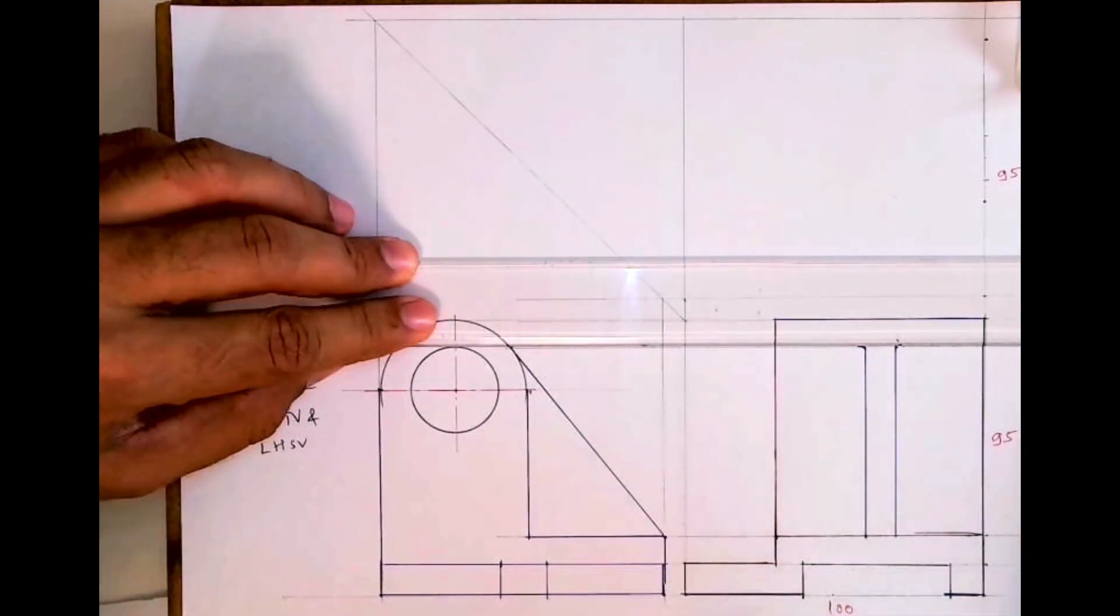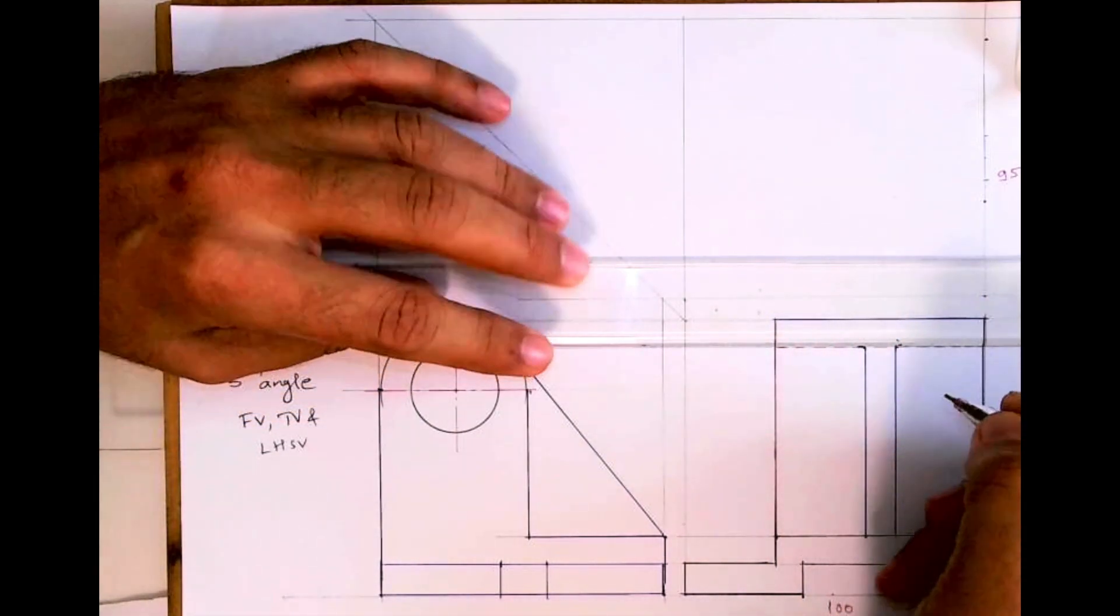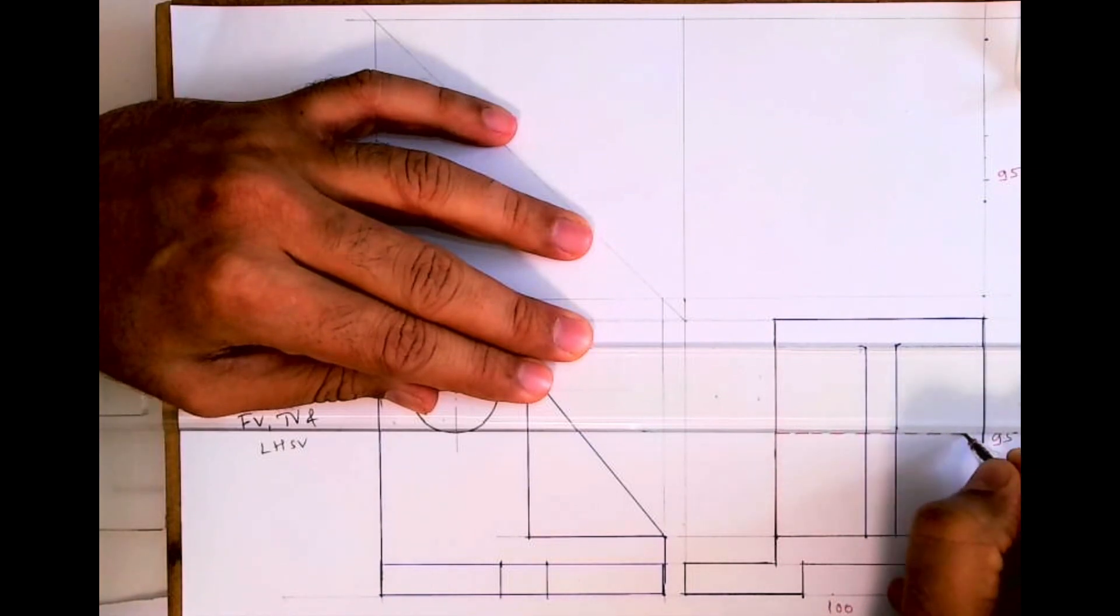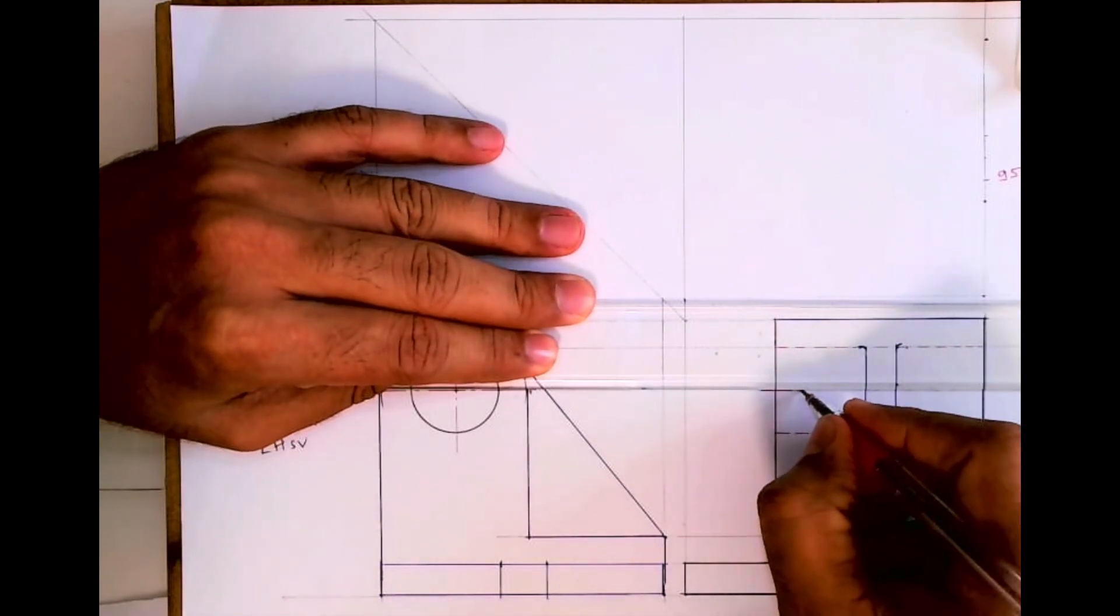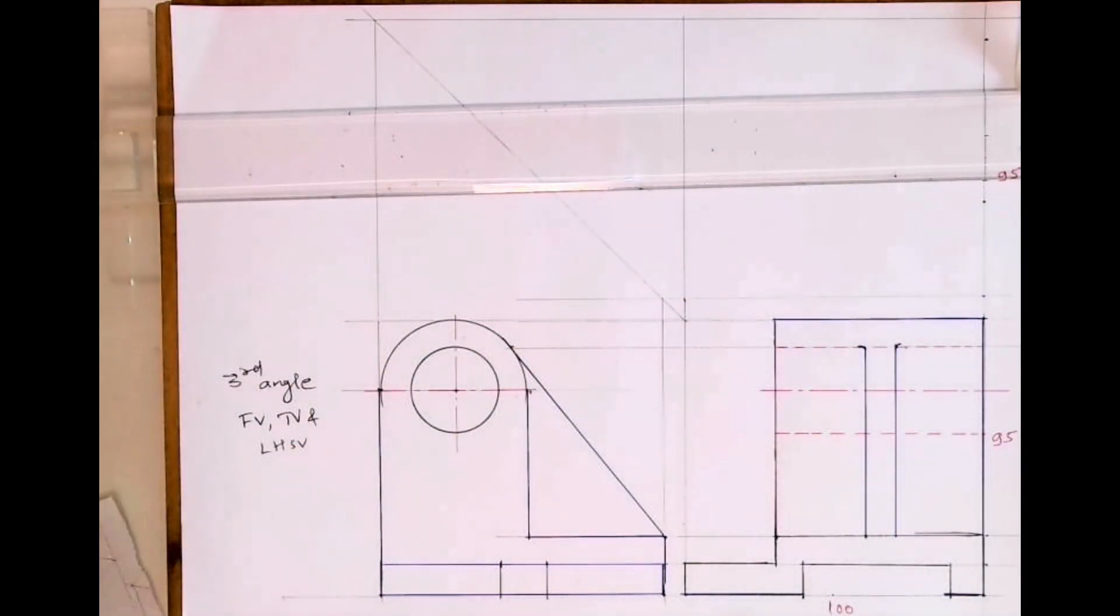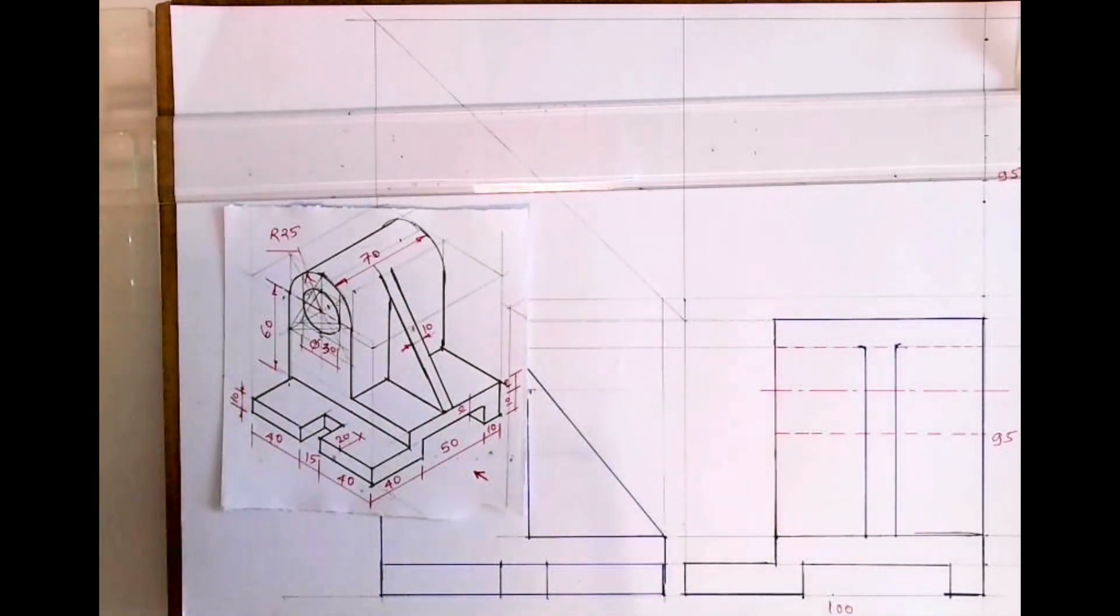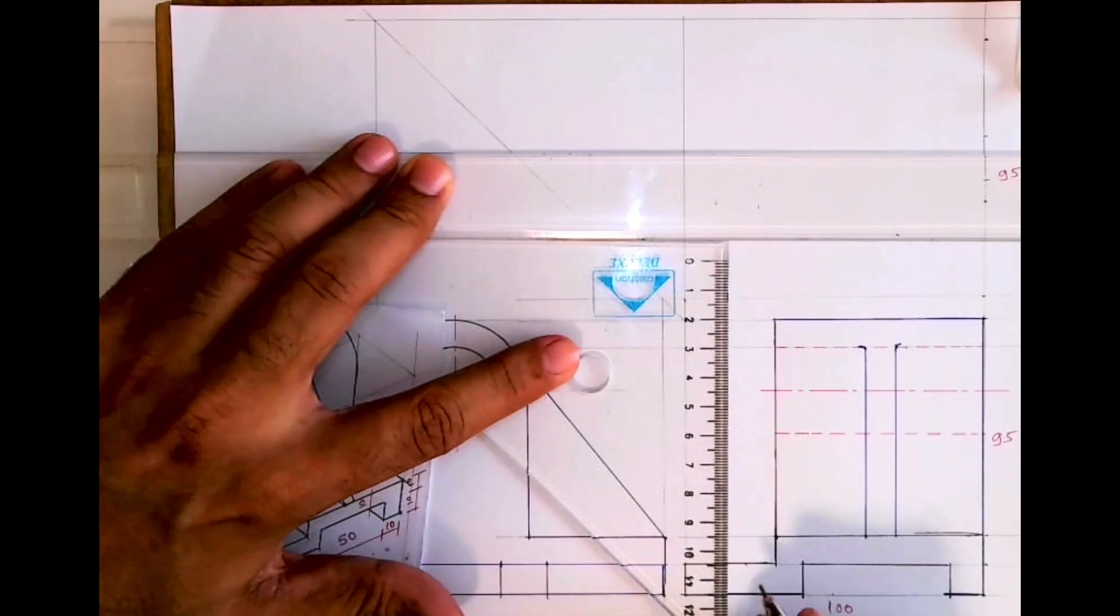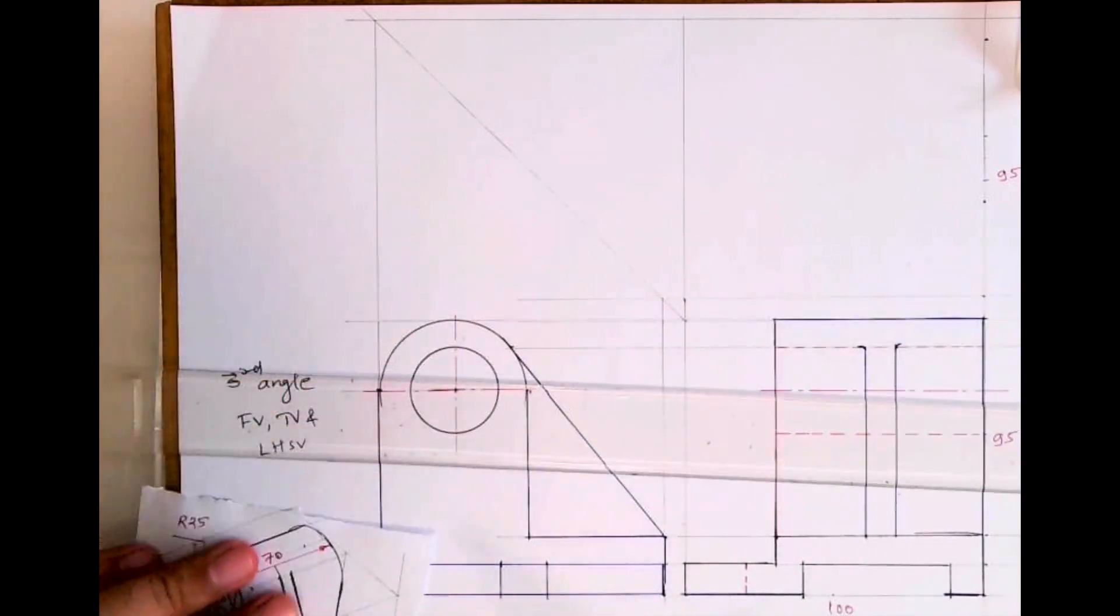And then we need to draw a dotted line for this circle, and we need to draw axis line. Now see we need to draw this 20 slot also. We can draw it when we draw it in the top view from there also we can project, or we can take directly 20mm and we can draw dotted line. So we are done with front view and side view, left hand side view.